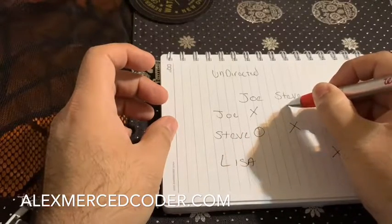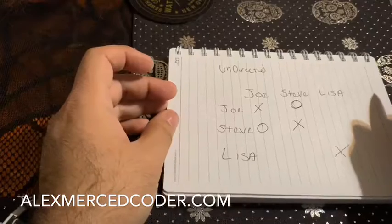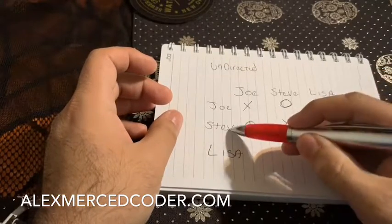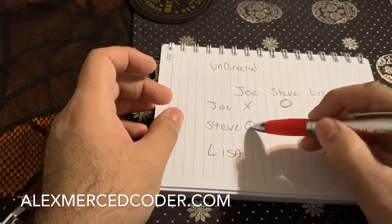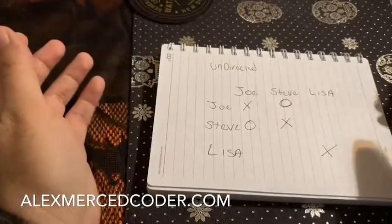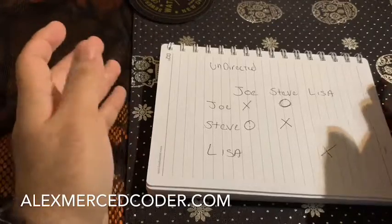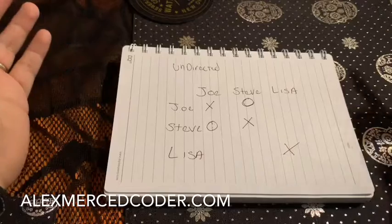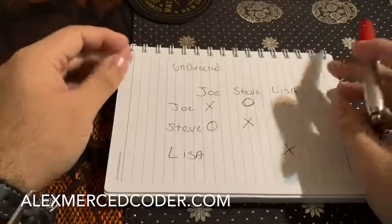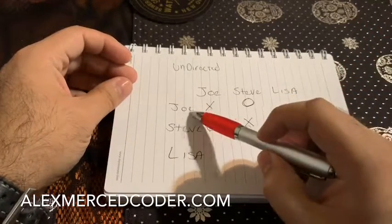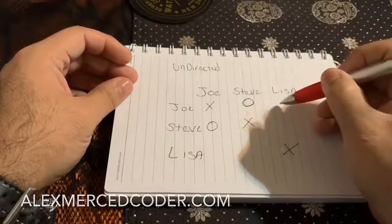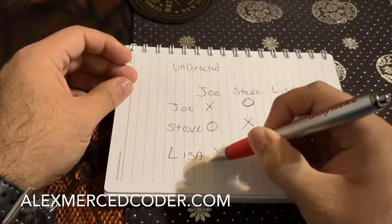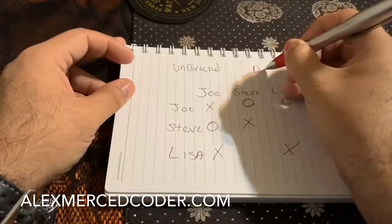It goes the other way too — Steve is Joe's friend as well. So that's undirected: when it goes for one person, it goes for the other person as well. But what about Twitter? On Twitter, when I follow somebody, they don't automatically follow me back. So Joe would follow Lisa, but Lisa doesn't follow Joe. That's called a directed graph.